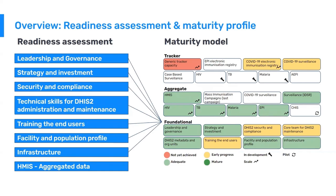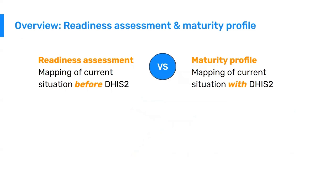On this slide, on the left are the topics addressed in the readiness assessment — areas such as leadership and governance, security, training of end users, and infrastructure, to mention a few. On the right, you see a visualization of the DHIS2 maturity model. The point of this slide is that the topics in the readiness assessment correspond quite closely to the foundational areas of a DHIS2 implementation, which are important to have in place for a solid functioning DHIS2 system. To summarize: the readiness assessment is the mapping of the current situation before you use DHIS2, and the maturity profile is the mapping of the current situation with DHIS2.